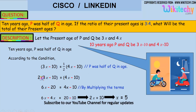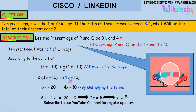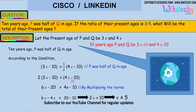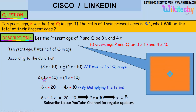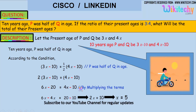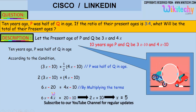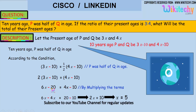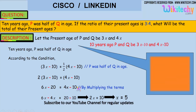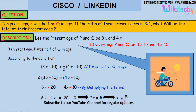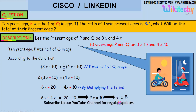Multiplying both sides by 2: 2 into 3x minus 10 is equal to 4x minus 10. So 6x minus 20 is equal to 4x minus 10. Moving terms, 2x is equal to 10, and x is equal to 5.